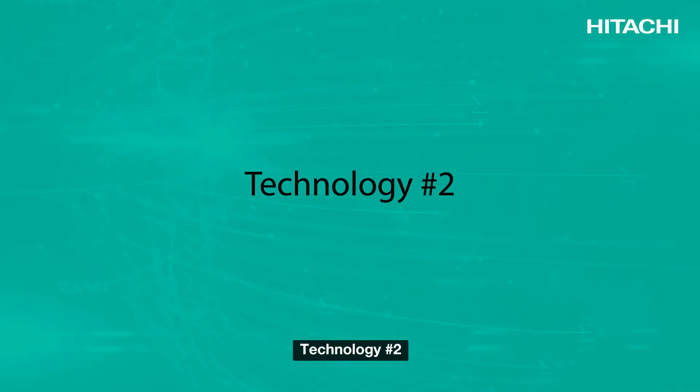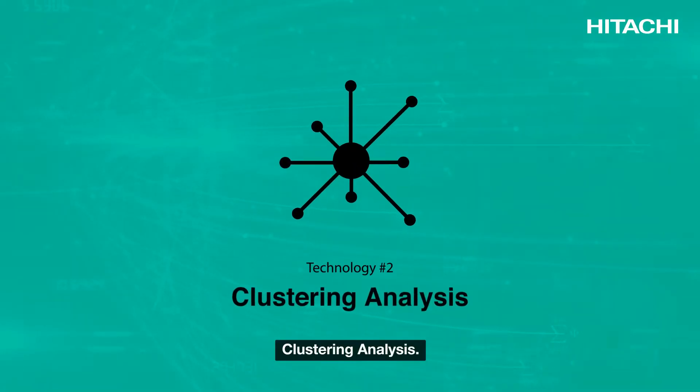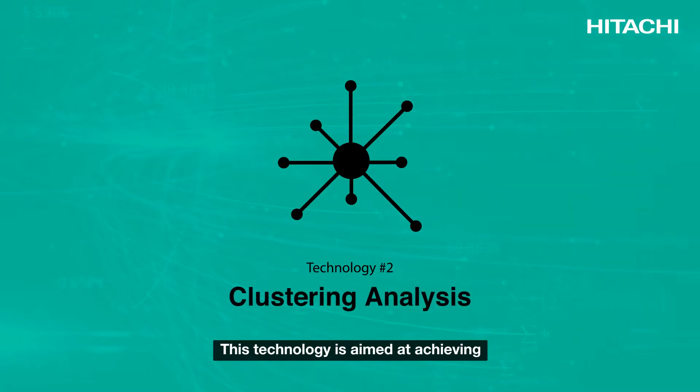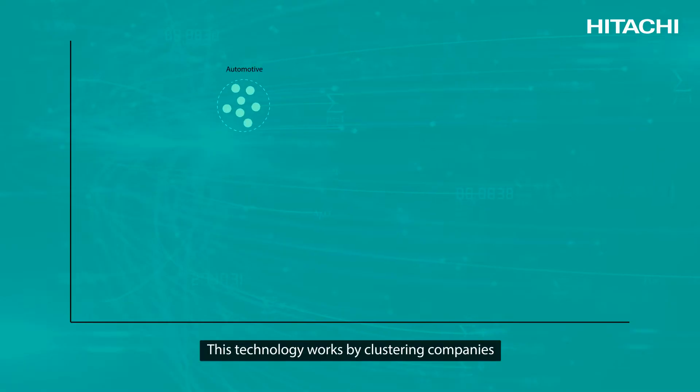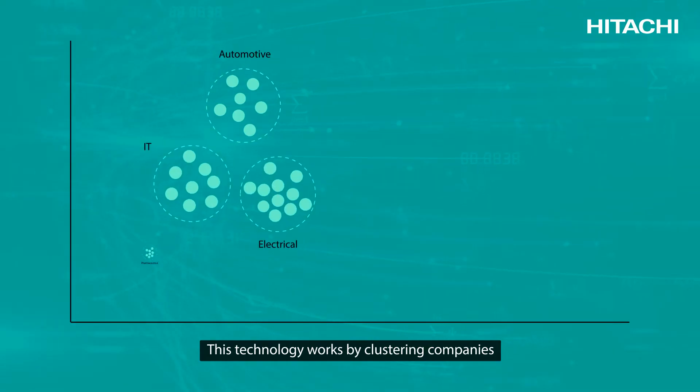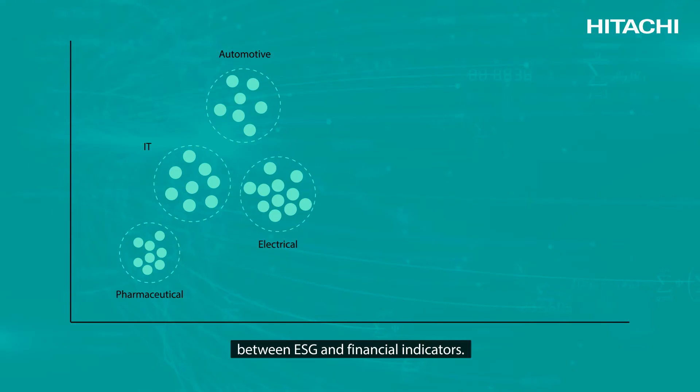Technology number two, clustering analysis. This technology is aimed at achieving meaningful benchmarking across industry sectors. This technology works by clustering companies with similar causal relationships between ESG and financial indicators.